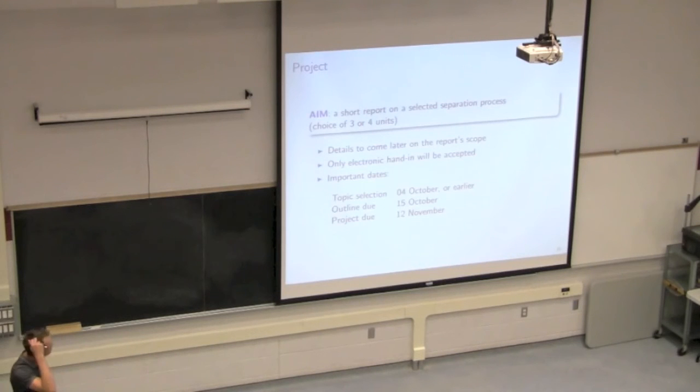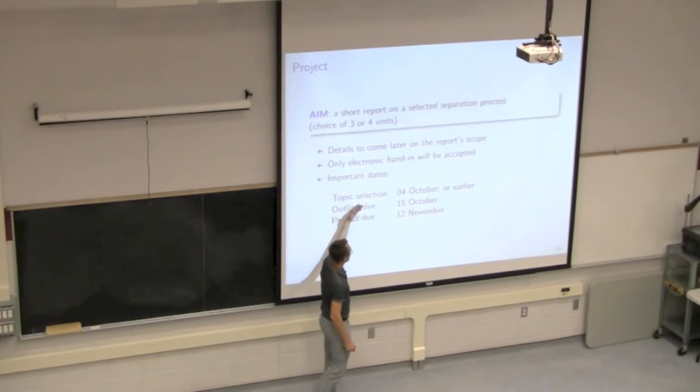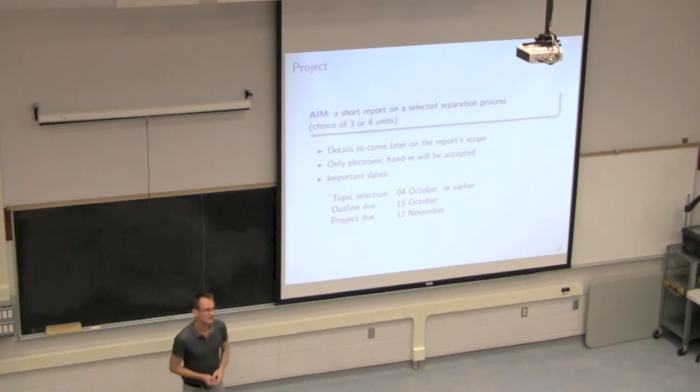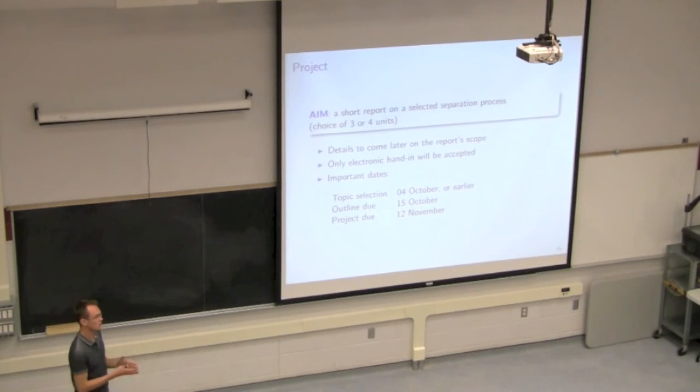So there's a short project that's coming up. The way I run the projects this year is that there will be a choice of a limited number of units or areas of application that you'll be considering. I'll have an update on the website that tells you exactly what the scope of that project is and the length and the requirements that that project is looking at solving. The hand-in will be electronic and it's got several deadlines. One is you must notify me of your topic selection by the 4th of October or earlier. The outline will be due 15th of October. That's a graded outline that you submit that you propose what you plan to look at in that project. And then the due date is actually fairly early. It's 12th of November. Much earlier than most course projects, which are then always wrapped up at the end.